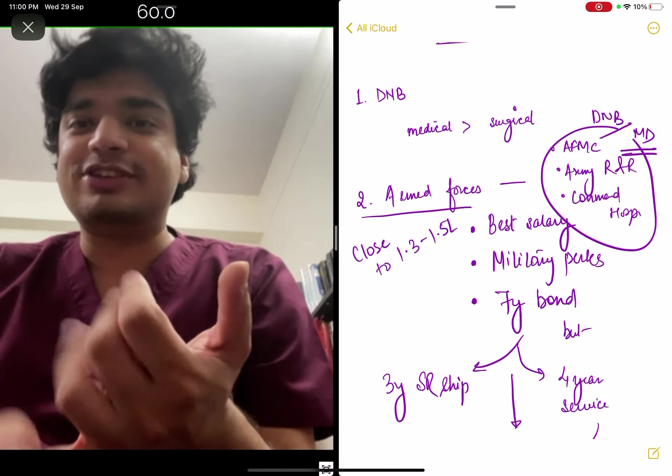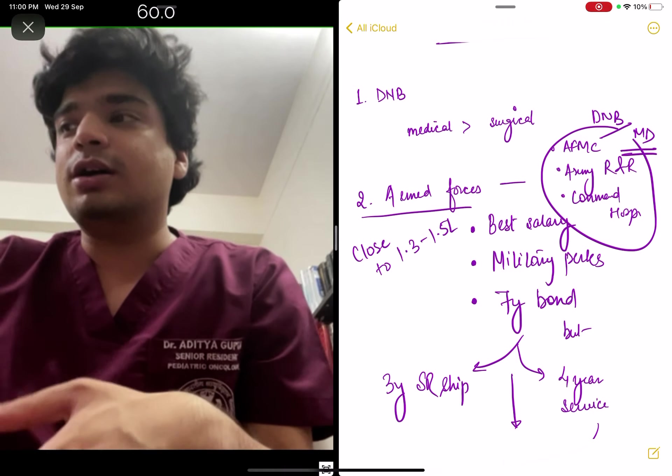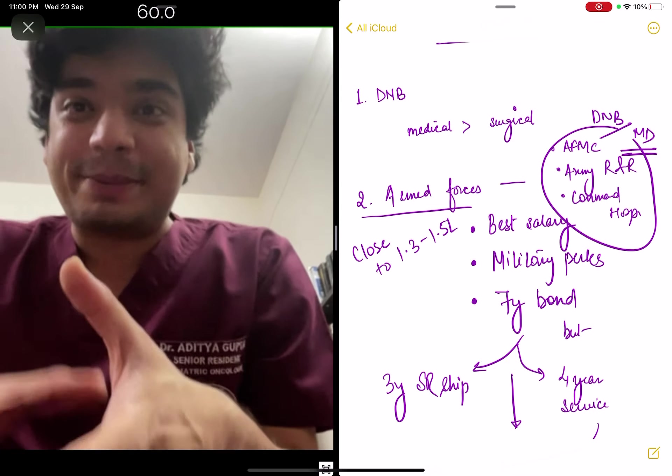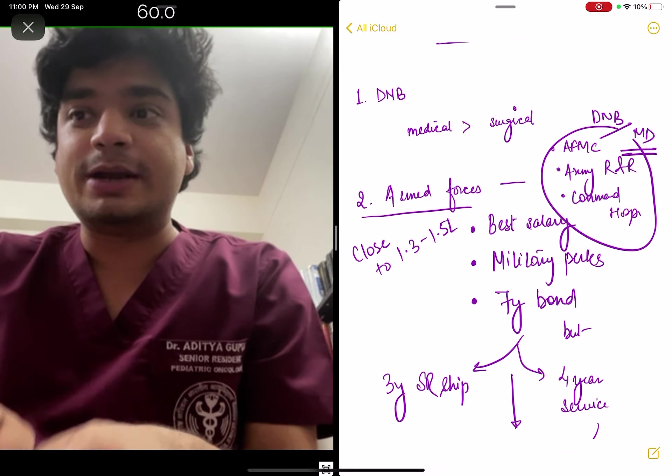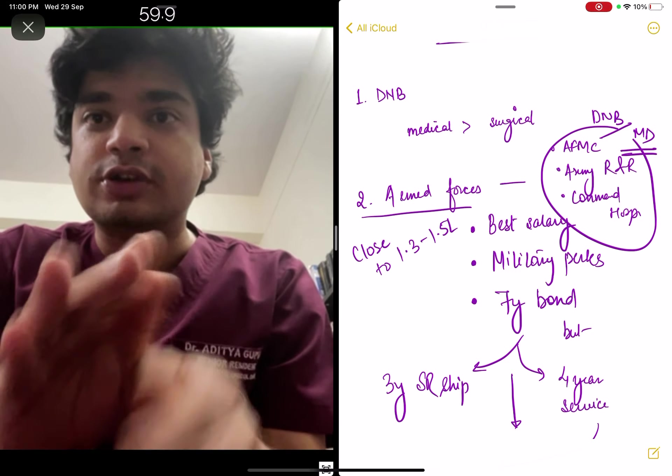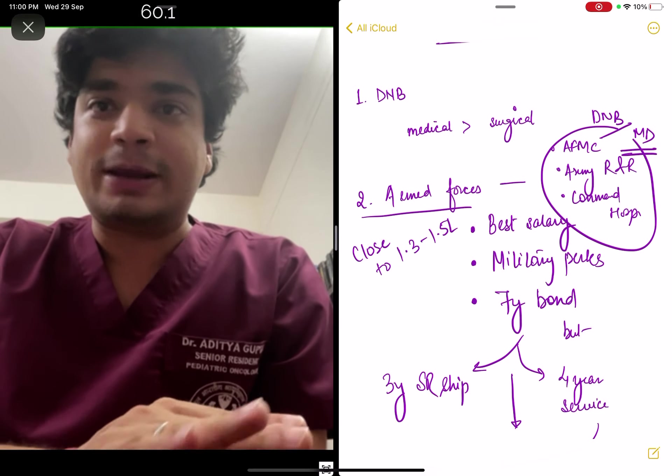1.3 to 1.5 lakh rupees if you include the HRA and other perks. Plus there will be other perks, canteen facilities, you will get concession as far as traveling is concerned, you will get a lot of paid holidays, leave encashment, things like that. As far as perks, salary during your residency is concerned, not even central institutes can beat the armed forces.